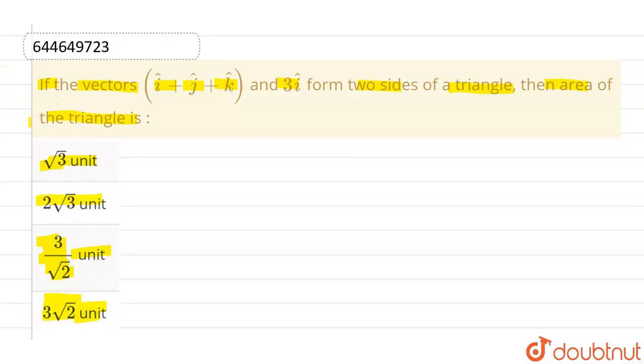So when two adjacent sides of a triangle are given, let's say this is a vector and the second vector is b vector, then its area will be given by half of magnitude of a vector cross b vector.